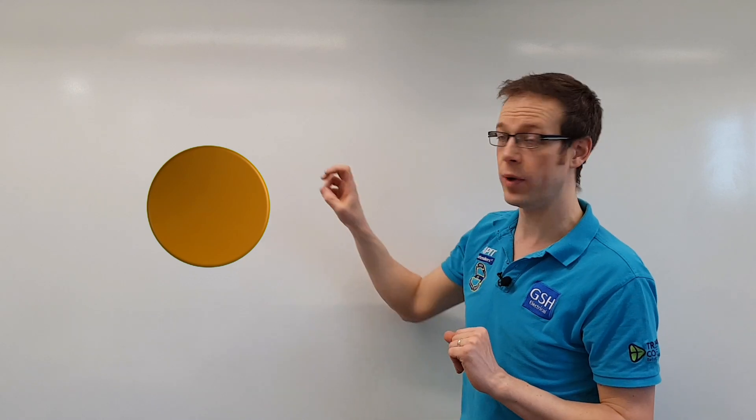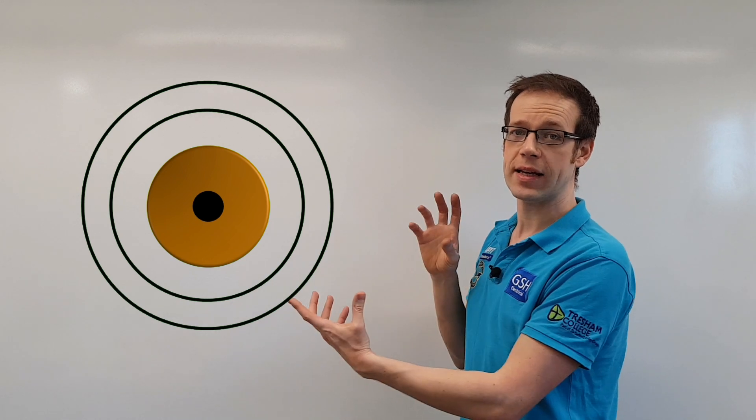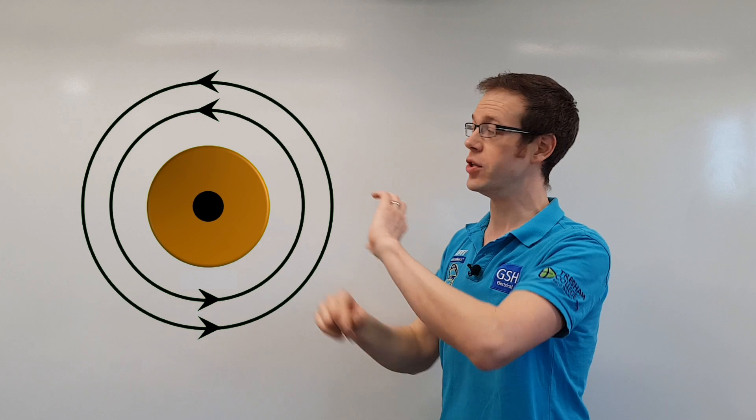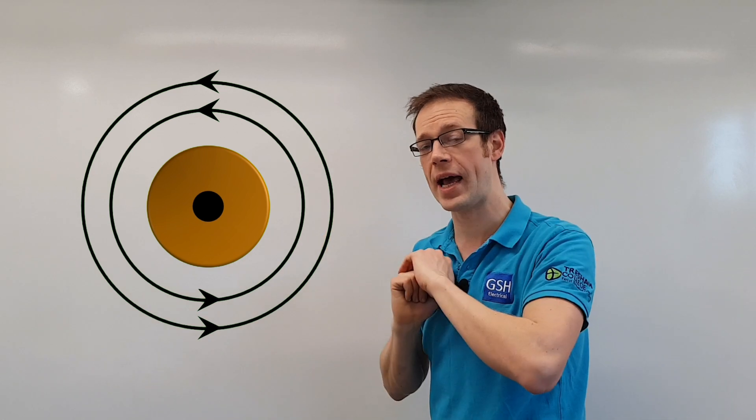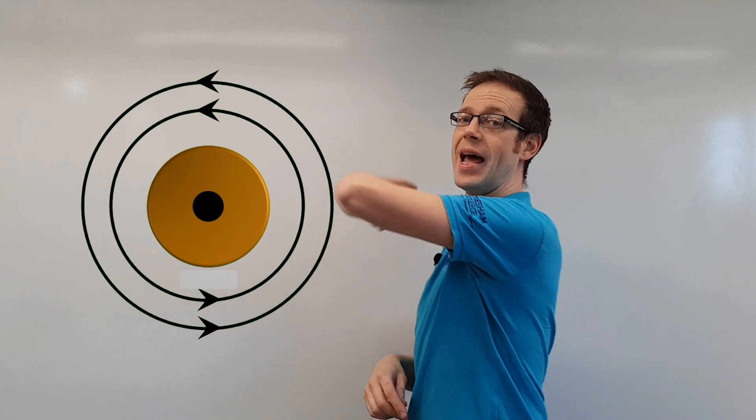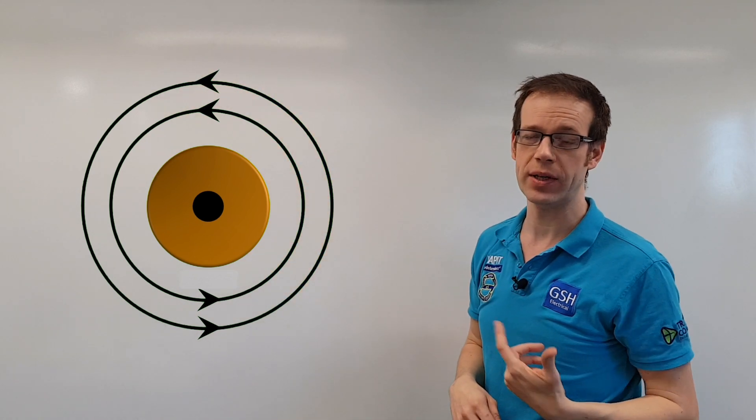Now if we think about what current looks like when it's coming towards you — represented with a dot in the middle of the conductor — we again have that circular magnetic field. But this time the magnetic field has changed its direction. When the current is flowing towards you, coming out of the screen as represented by the dot, the magnetic field now has an anti-clockwise direction — it's going in the opposite direction.